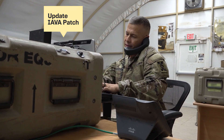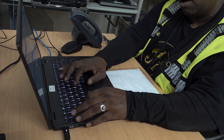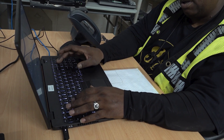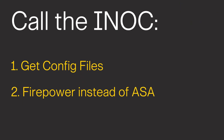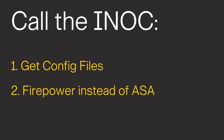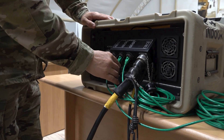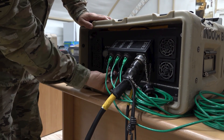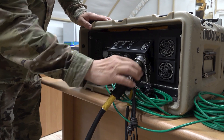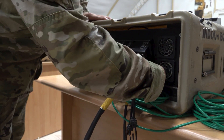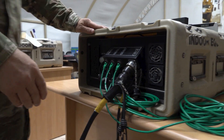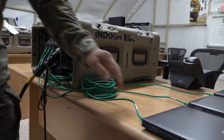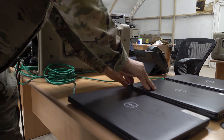Ensure you have the latest IEVA patches. The next thing to do is to call the INOC to get your configuration files. Because they are configured differently, please make sure that the INOC is aware that you are doing a Firepower implementation and not an ASA. This can be done up to 7 days before your appointment. The configuration files provided by the INOC can only be installed when it is cabled up correctly. This process can be done the day of the appointment, and will be part 3 in the Firepower installation guide provided by the INOC.